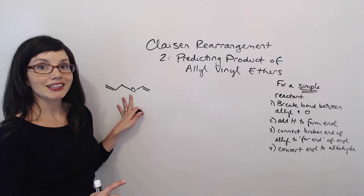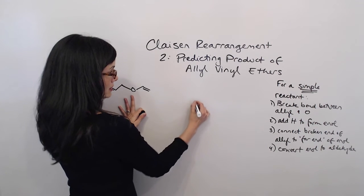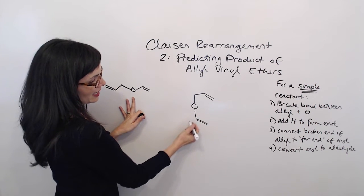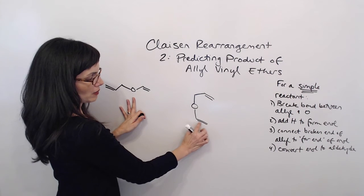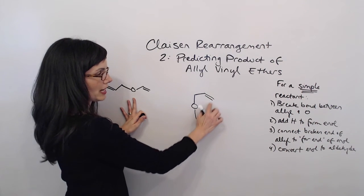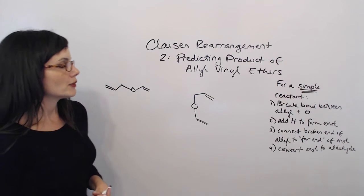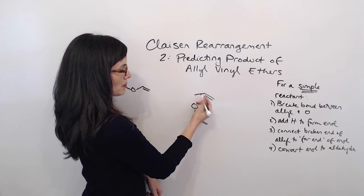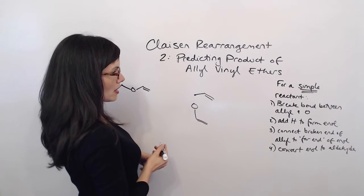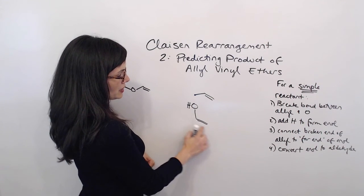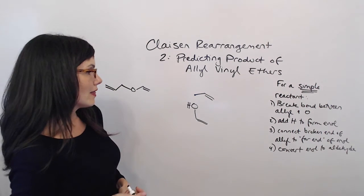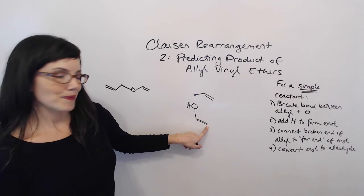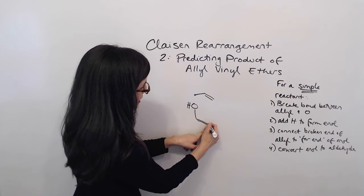First, I want to set this up so that my allyl group is on top and bending over to the right. And when I draw my vinyl group on the bottom, I also want it to go over to the right. This is similar to when we drew the benzene ring — we have this double bond here over to the right, so that this double bond can react with this double bond. Now what I'm going to do is first break the bond between my allyl group and my O, and mark this as the broken end of my allyl group. I'm going to protonate this O, and notice how I've formed an enol. Then I'm going to connect this broken end of my allyl group to the far end of the enol — so I'm going to take this and bond it right here.